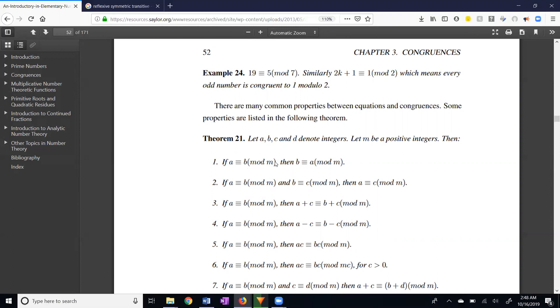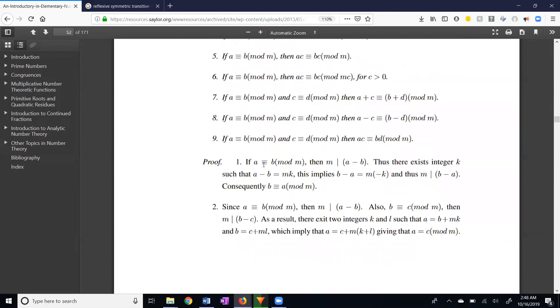This is our given information, and this is what we're trying to prove. So we start with our given information. We know that A is congruent to B mod M. By definition, that means that M divides A minus B. By definition of divides, there exists an integer K such that MK equals A minus B.